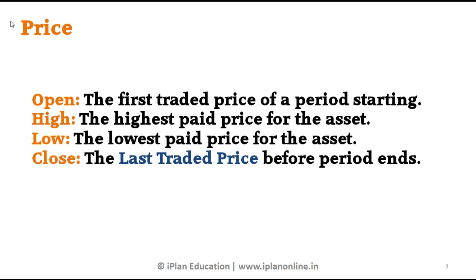First is the open price. Open price is the first traded price of any period starting. So let's say your market opens at 9 o'clock or 9:15, and the first trade that happens in a particular script is the open price for that script. High is the highest price of that asset — somebody paid the highest amount in a particular time frame. The lowest is the lowest value it sold for, and the close is the last traded price before that period or the day ends.